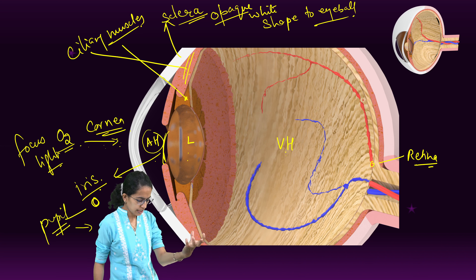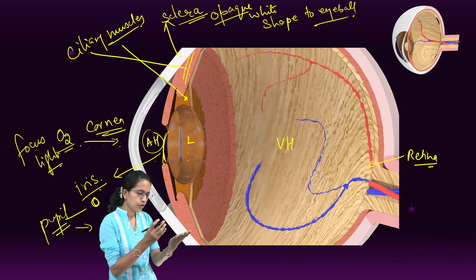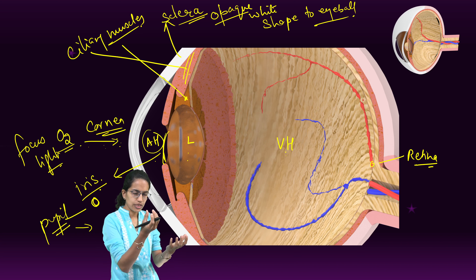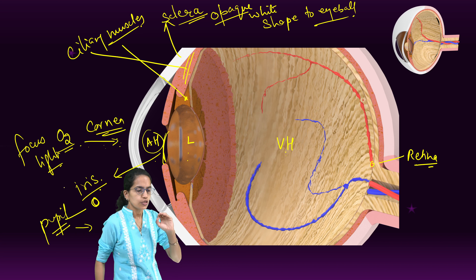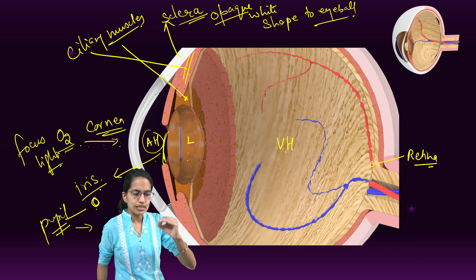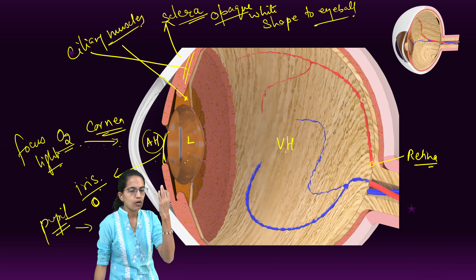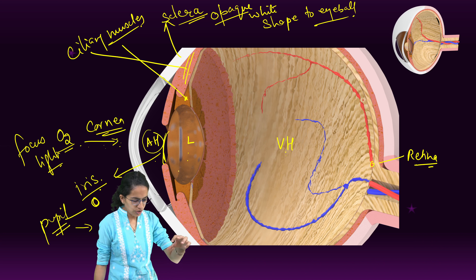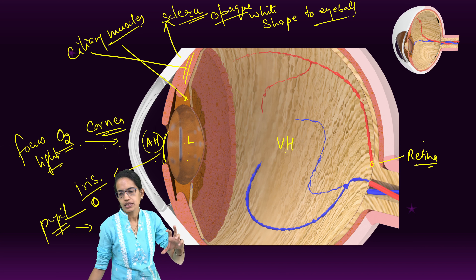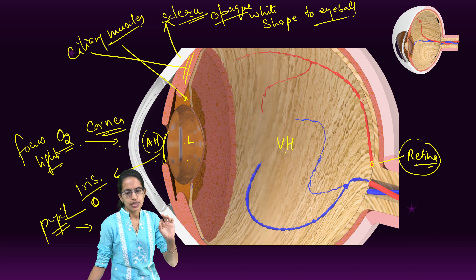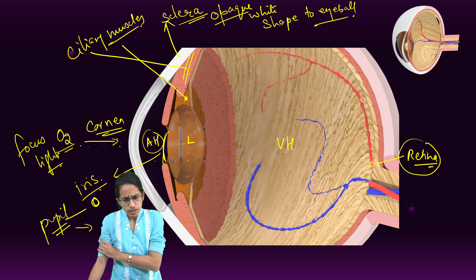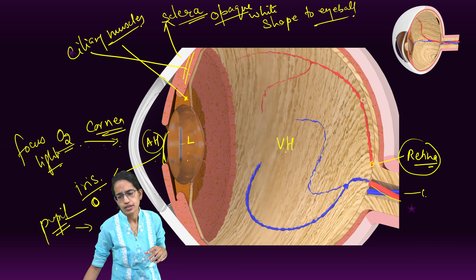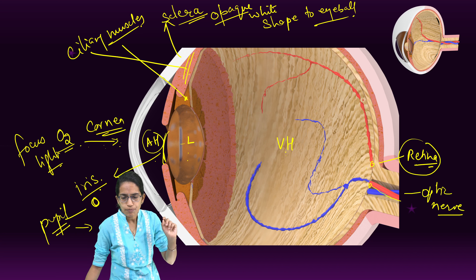Now the ciliary muscles are actually having some ligaments here and these are known as suspensory ligaments. Suspensory ligaments are present in the eye to understand how the ciliary muscle holds the lens. This is the aqueous humor which is present between the cornea and the lens. Vitreous humor is present between the lens and the retina — very, very important to note. Now then you have the iris. Now iris is the opaque colored part of the eyeball that you can see.